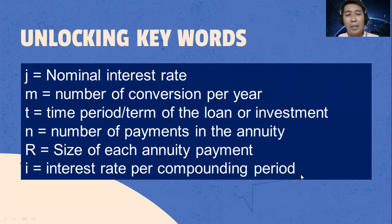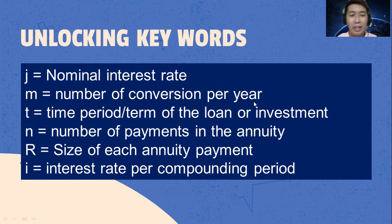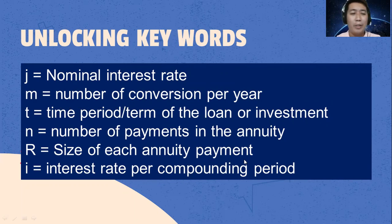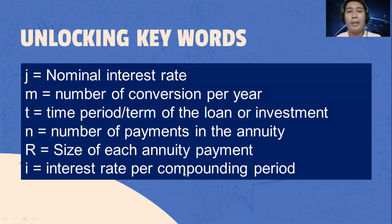These are the keywords to be remembered. J is equal to nominal interest rate. M is equal to the number of conversions per year. T is equal to the time period or term of the loan or investment. N is the number of payments in the annuity. R is the size of each annuity payment or the periodic payment. I is equal to interest rate per compounding period.